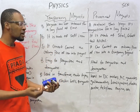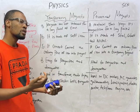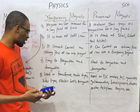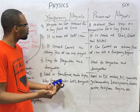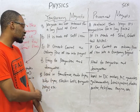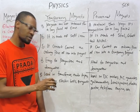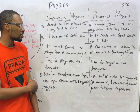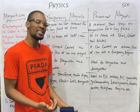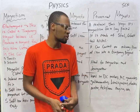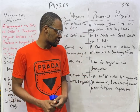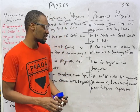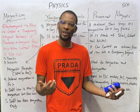Temporary magnets are used in transformer cores, audio tapes, video tapes, electric bells, and magnetic relays. Permanent magnets find application in DC motors, AC generators, galvanometers, loudspeakers, electric meters, and telephone earpieces.